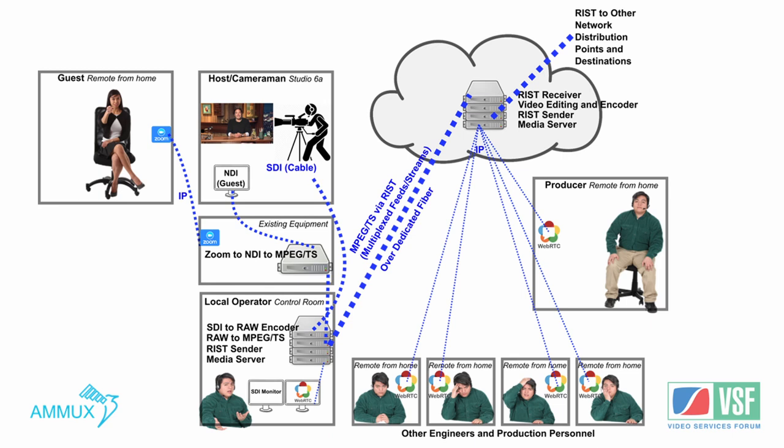Some existing equipment converts the incoming signal — whether Zoom, Skype, or Teams — which now has a native NDI output. Our encoders could pick up that NDI output from the remote feeds coming from the guests and would encode that and send it to the media server.